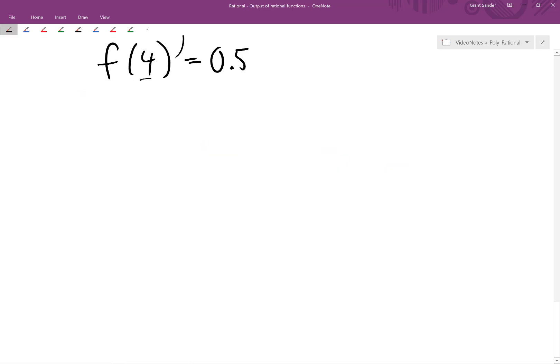So in general, if we have a rational function f, then the output f of x tells us the size of the numerator relative to the denominator. So if we were to say something like f of x equals 7, that would tell us that the numerator is 7 times as large as the denominator of that rational function. We can always think of the output of rational functions as a relative size comparison of the numerator to the denominator.